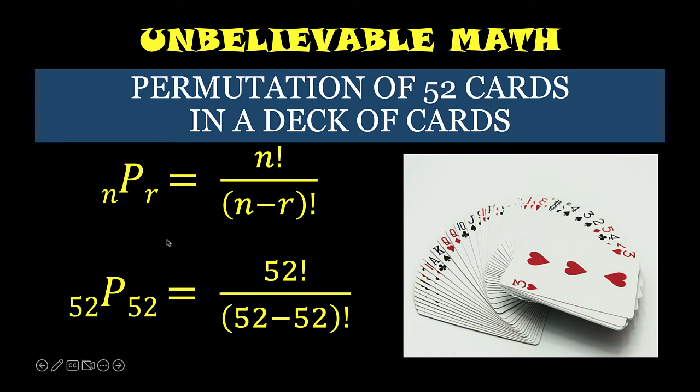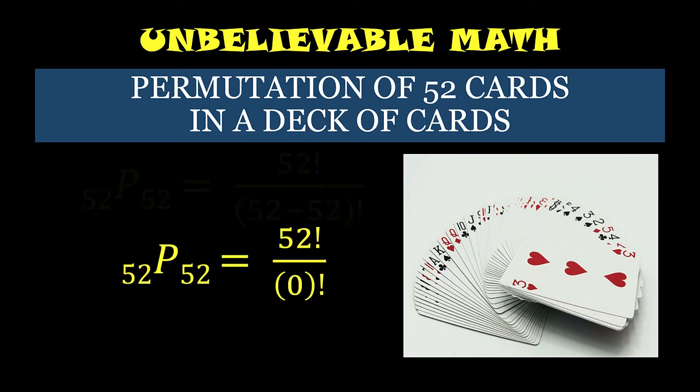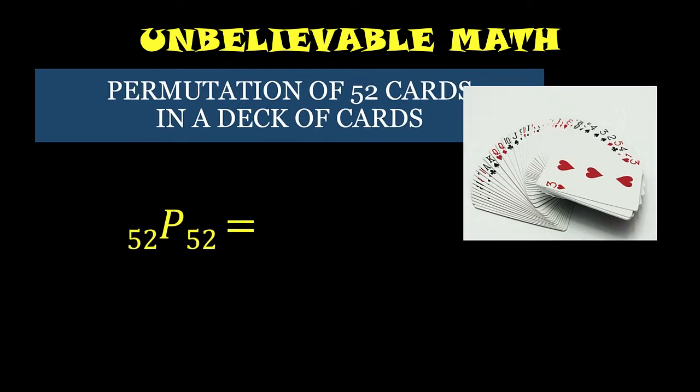And so substituting now in the formula, we have 52! / (52 - 52)!. And the denominator becomes 0!. But by definition, 0! is equal to 1. So we have 52! / 1, or simply 52 factorial.